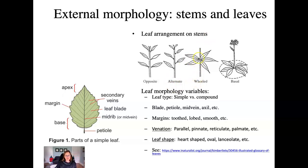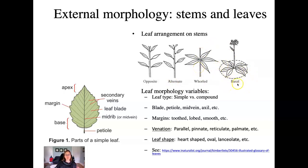Whorled leaves are much less common. This is where you have a whole set of nodes — more than two — at a single location along the stem. A much less common arrangement, but it's fairly common to see it as a basal whorl. Basal means that the leaves are all generated from the base of the stem and then there's a reproductive part that shoots out from the center of the basal rosette.